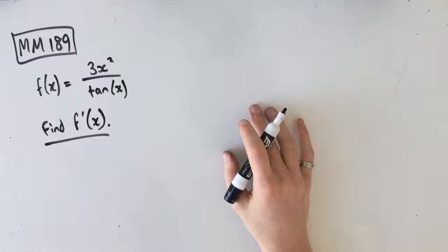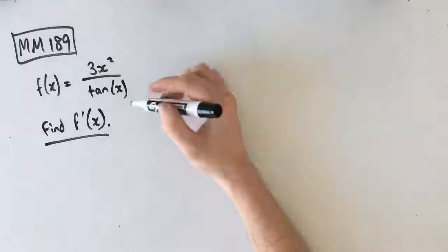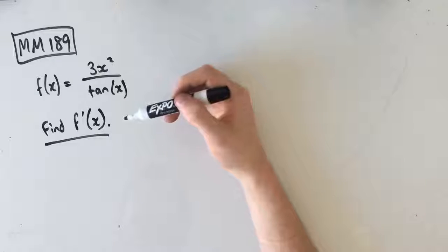Hey guys, welcome to question MM189 of the Maths Methods Fortify Study Guide. So we've got this function f of x equals 3x squared over tan x, and we need to find f dash of x.